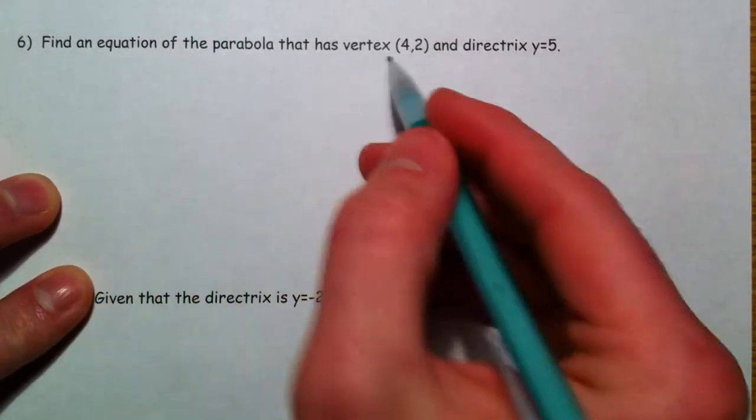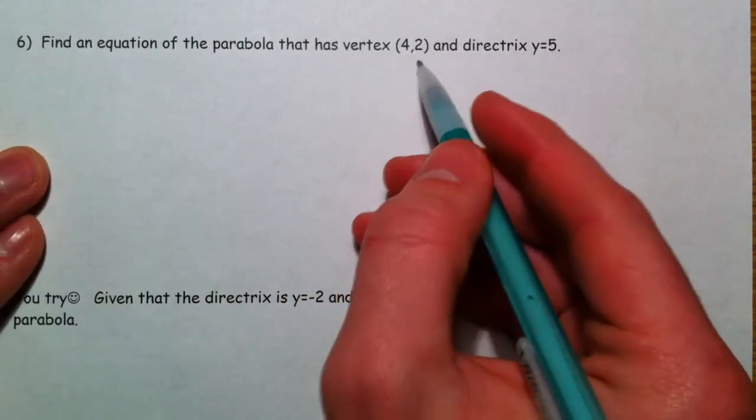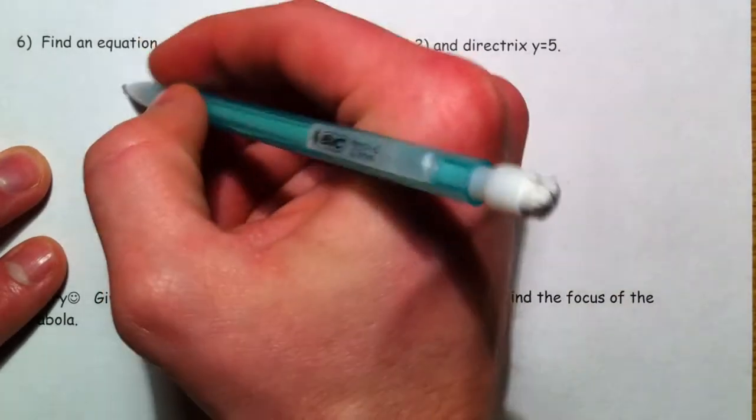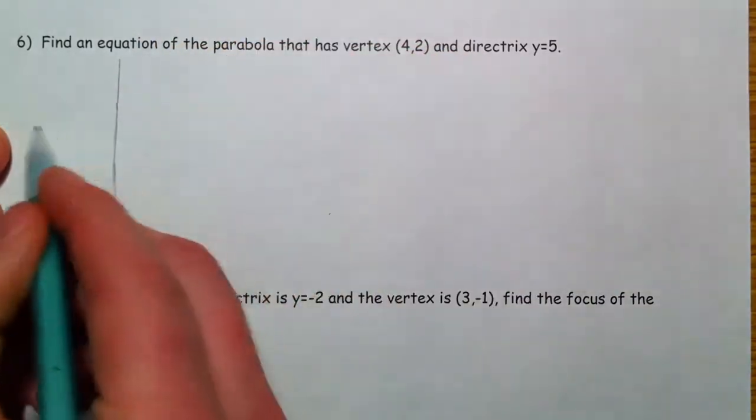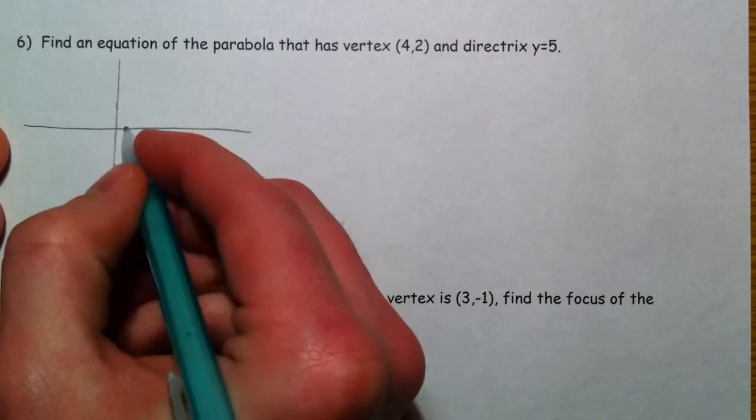Still a couple more examples. Find an equation of the parabola that has vertex (4, 2) and directrix y equals 5. So again, very visual here. I think it's the easiest way to do it.